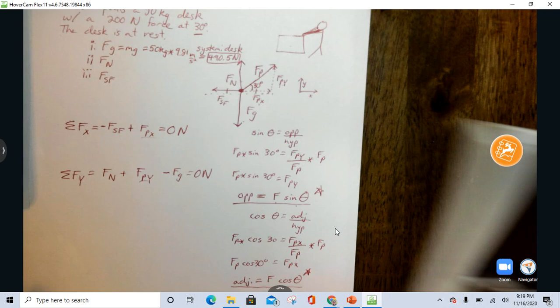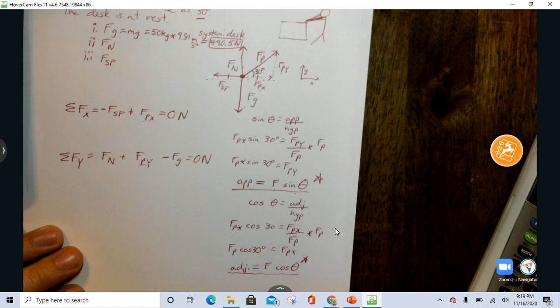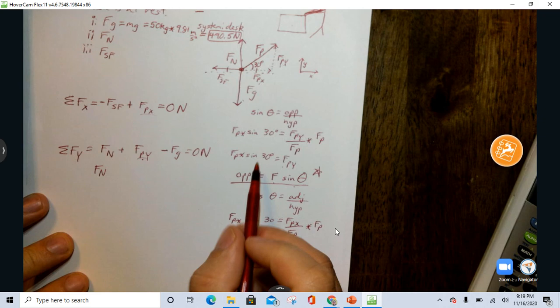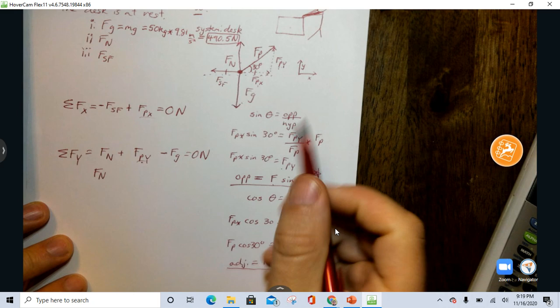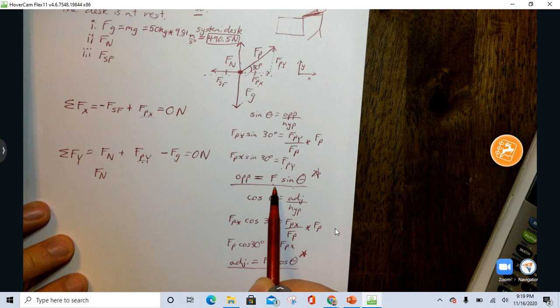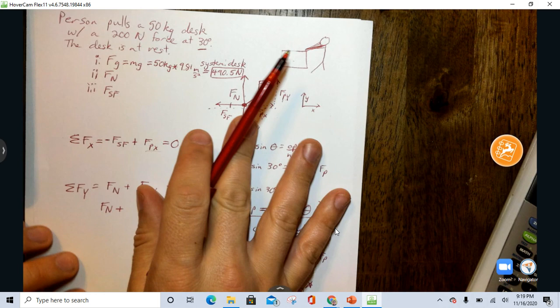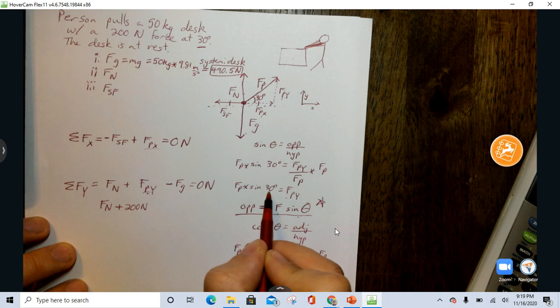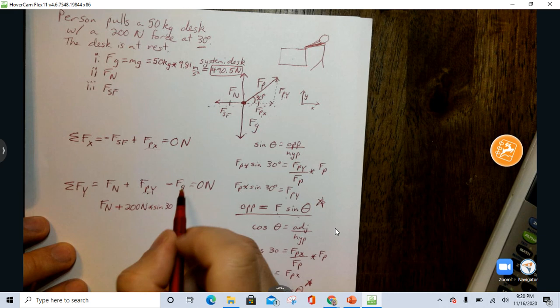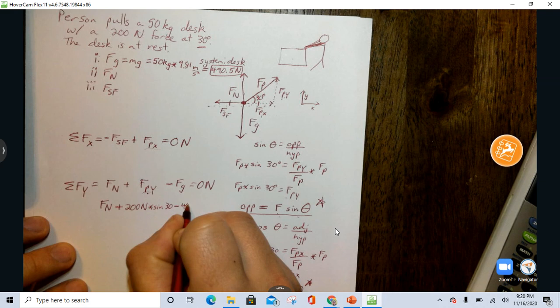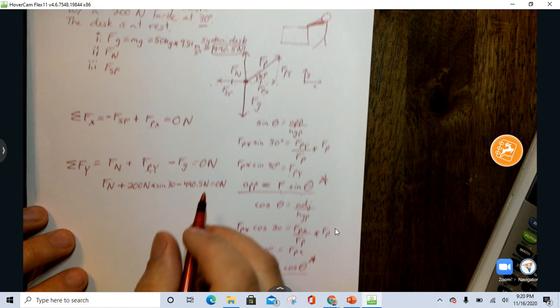Now, if I want to find normal force, I'm going to use force in the y-direction here. And I know some things. I know I'm solving for this, so I'm going to leave that alone. FPY, we showed over here, it is the opposite side to this angle that we know. So, it's going to be the force times the sine of the angle. So, we know it is the force, 200 newtons, times sine of 30. And we know FG, we already solved for up here, is 490.5 newtons. All equals zero newtons.